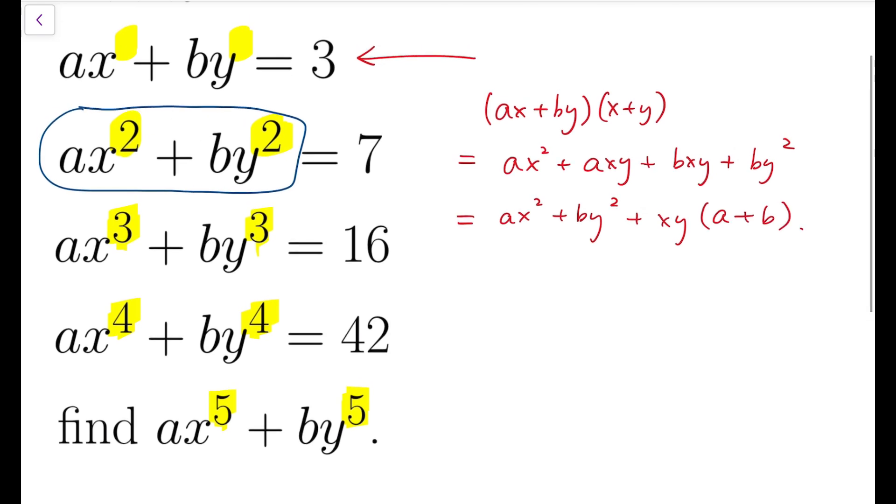So as we can see, part of the result of the product is 7 and it's added by xy times a + b. So I can rewrite this, these steps into 3 times (x + y) is equal to 7 plus xy multiplied by (a + b).